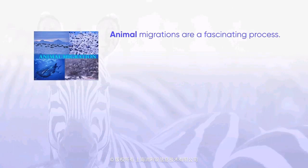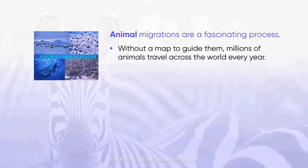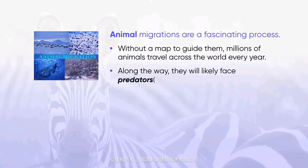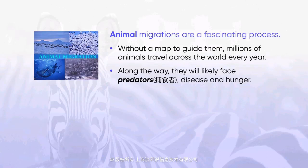Animal migrations are a fascinating process. Without a map to guide them, millions of animals travel across the world every year. Along the way, they will likely face predators, disease, and hunger. Many won't survive, and yet they still go on these incredible journeys to find food, suitable weather, and even to mate.